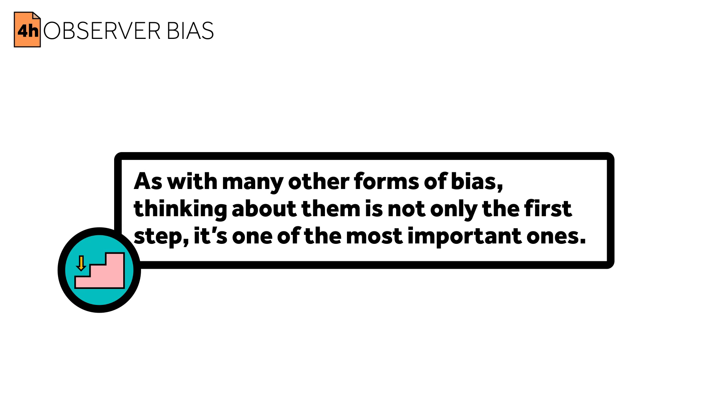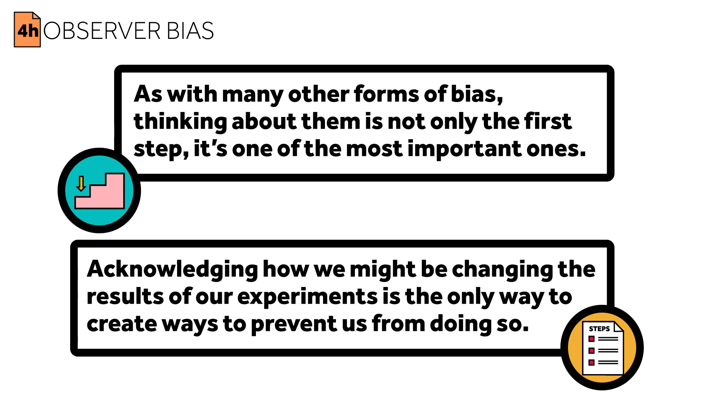As with many other forms of bias, thinking about them is not only the first step, it's one of the most important ones. Acknowledging how we might be changing the results of our experiments is the only way to create ways to prevent us from doing so. Some of the ways that observer bias can affect experiments can't be fixed — and that's okay. Considering and reporting these instances will help other researchers to improve upon our work, or at least be aware of our faults when they try to build upon it later.